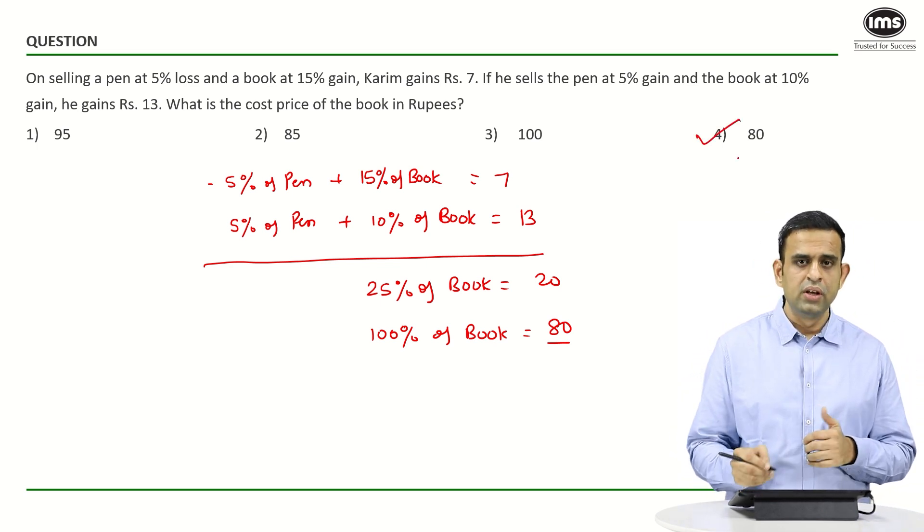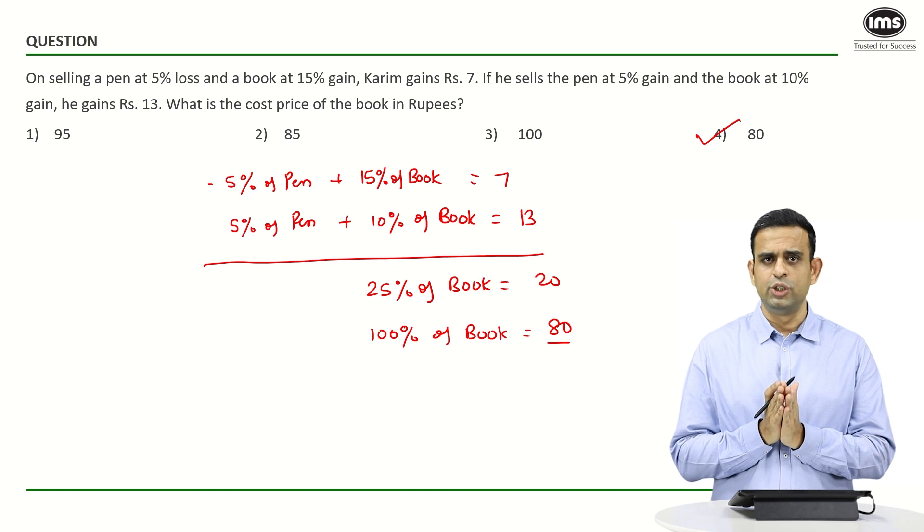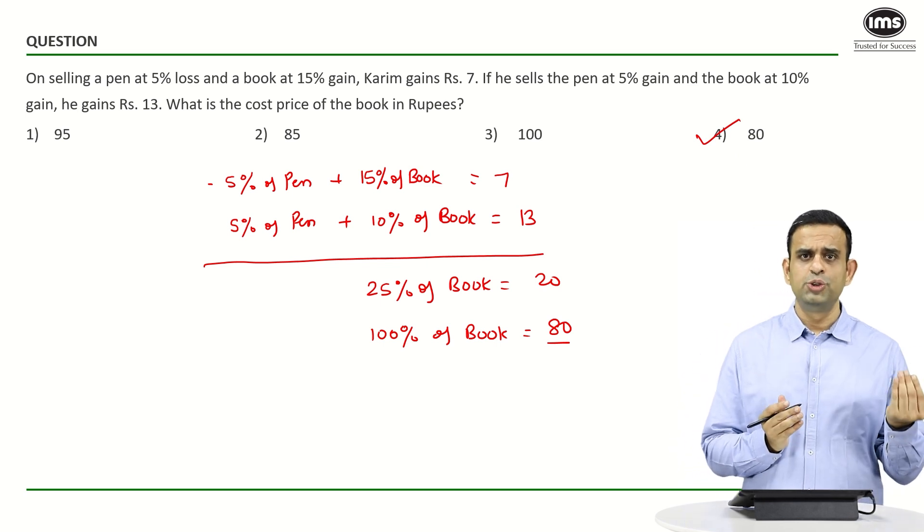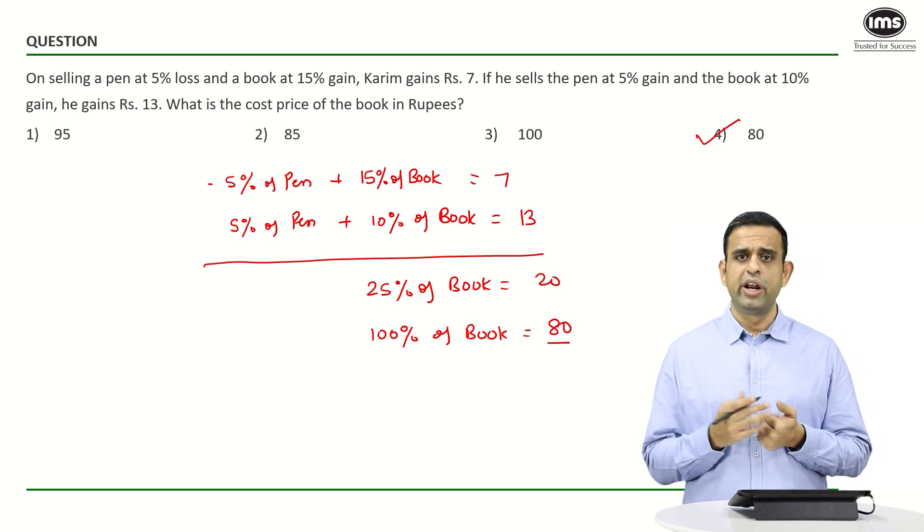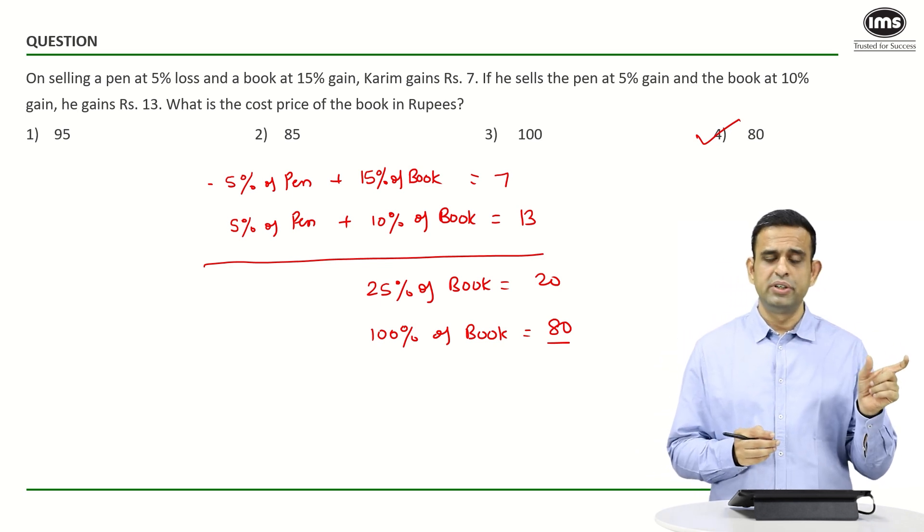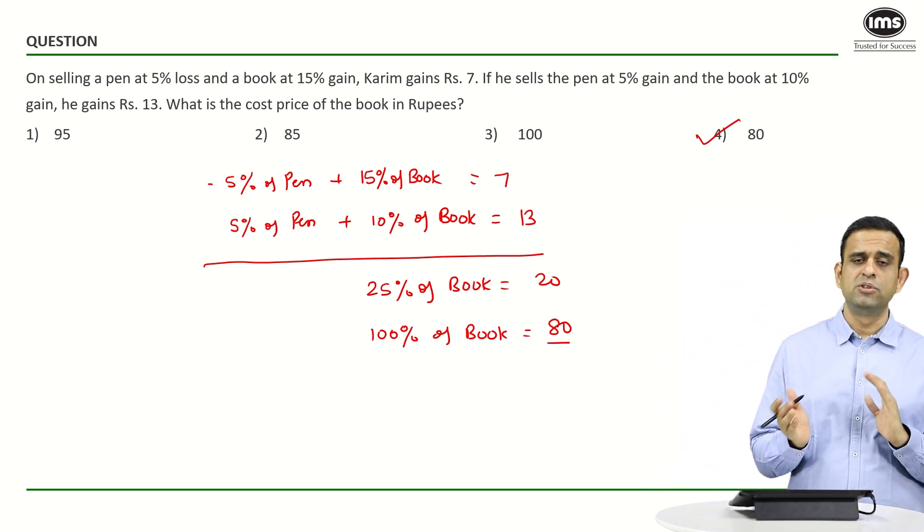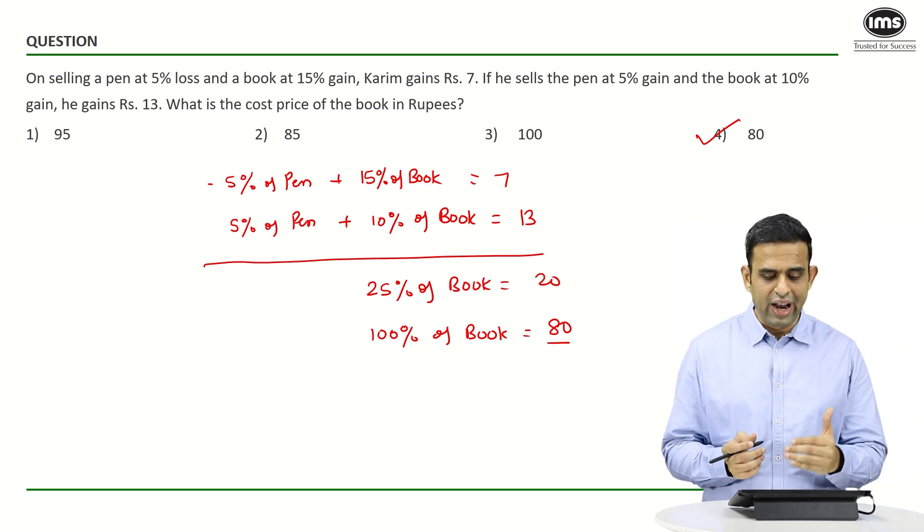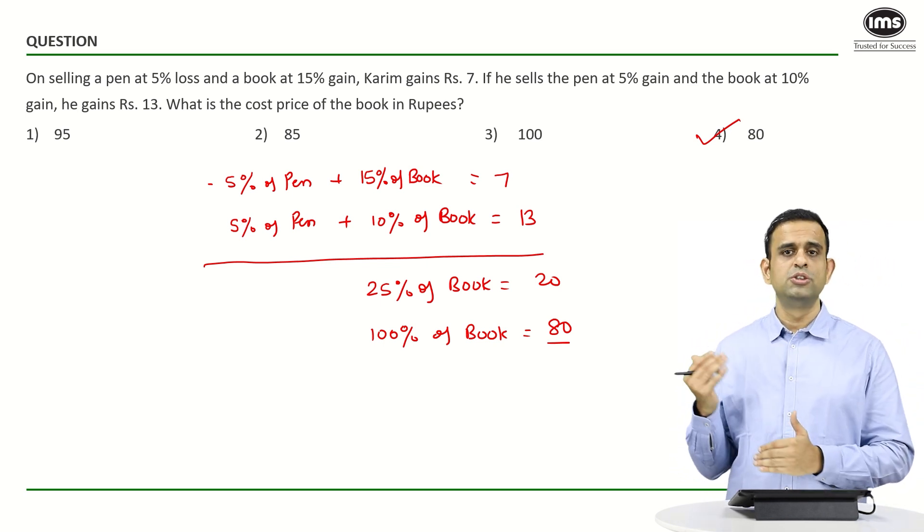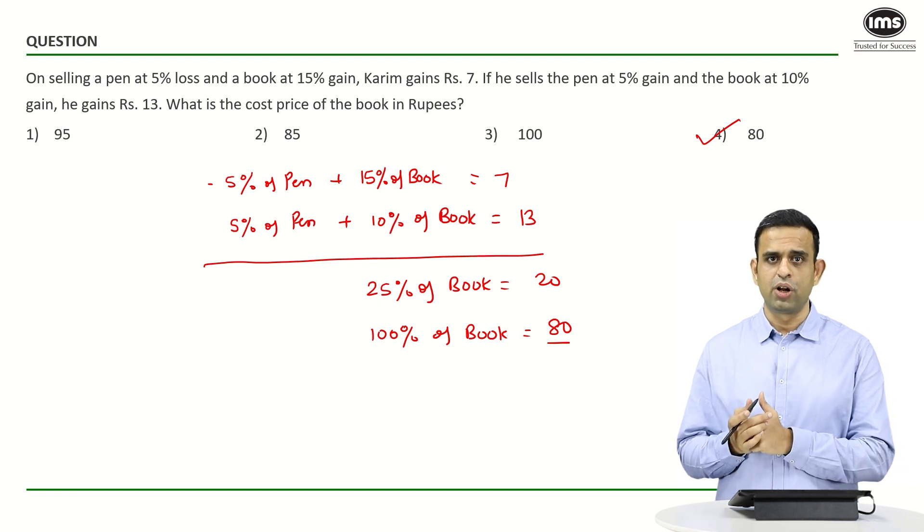Now, if you carefully look at this particular question, you can notice that the loss which you get on the pen is going to get offset by the profit you get on the pen, since my loss percent and the gain percent on the pen happens to be same, both is 5% and 5%. So if you add the two profits, you simply get 7 plus 13 equals to 20 rupees total profit.